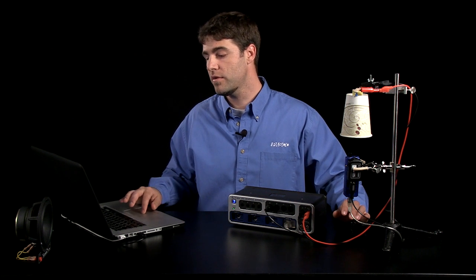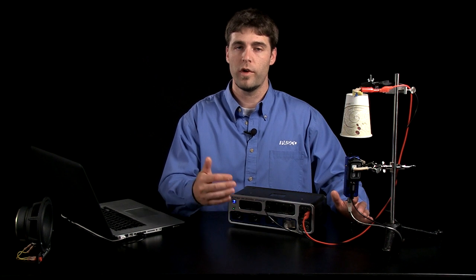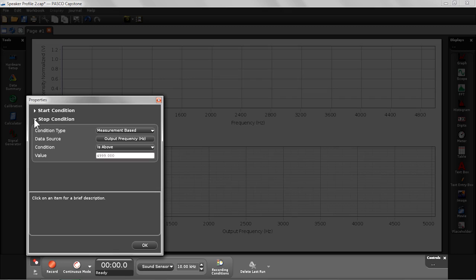In addition to those controls I also have set up a stop condition that's going to allow the software to automatically stop recording data when the frequency reaches 5000 hertz or as you can see here the output frequency is above 4999 hertz.